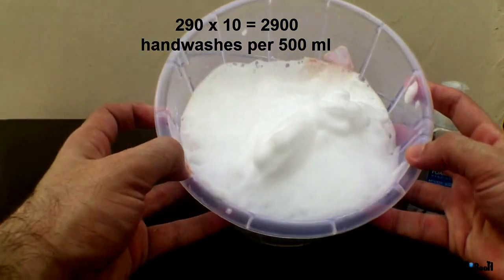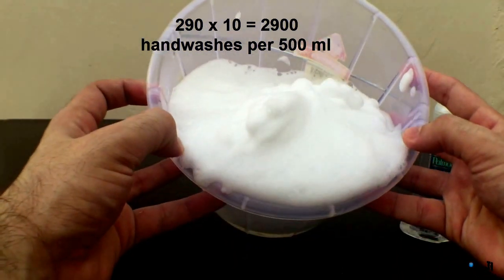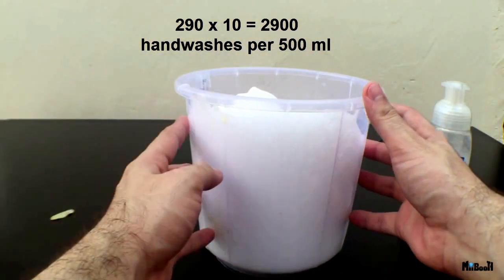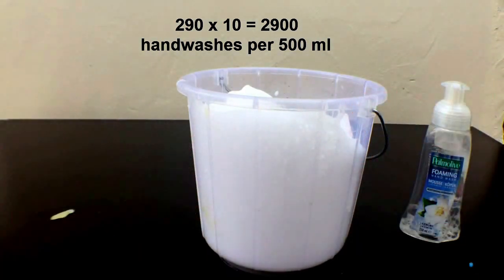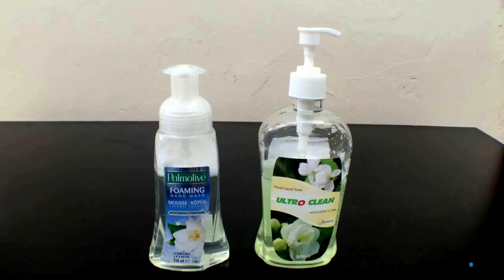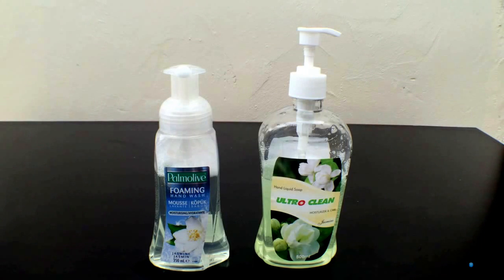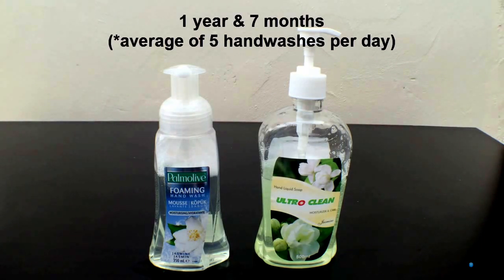According to a survey on cleaninginstitute.org done in 2009, an average person washes their hands about 10 times a day. Considering that half of this is at home, one bottle of standard liquid turned into foaming hand wash will last for one year and seven months.